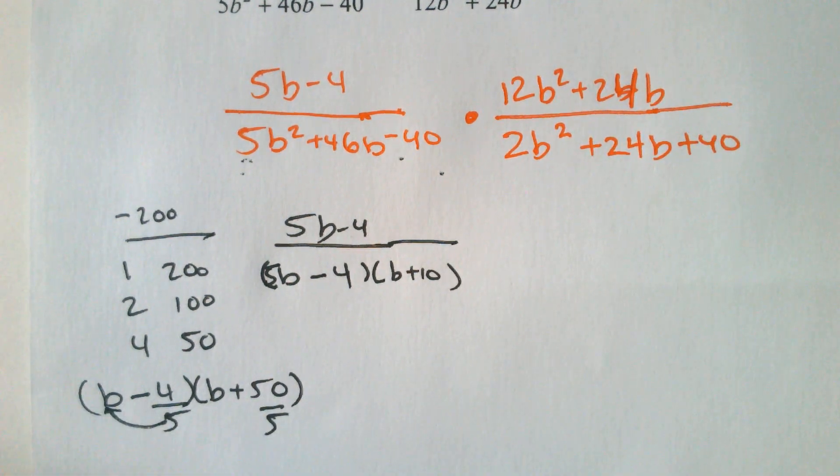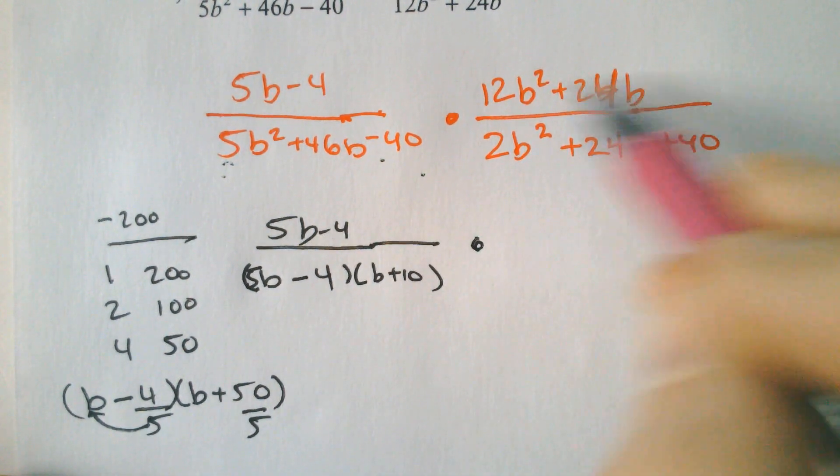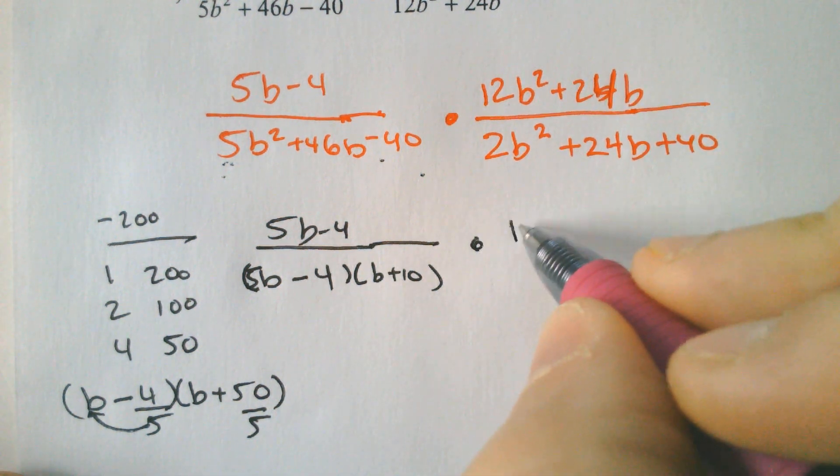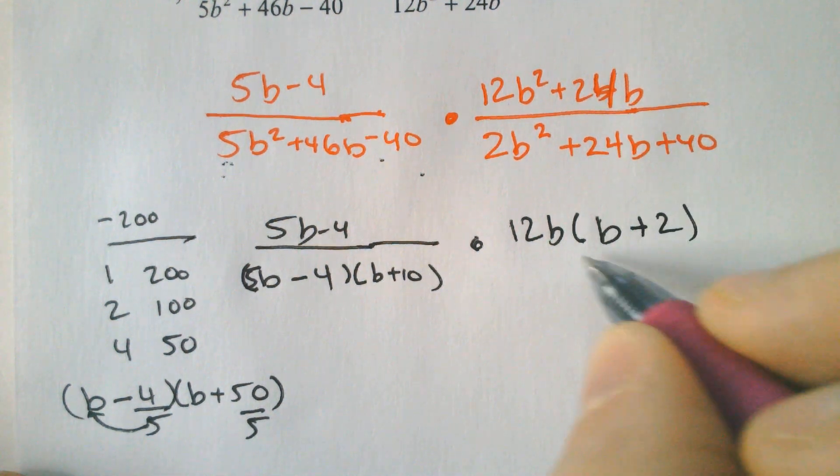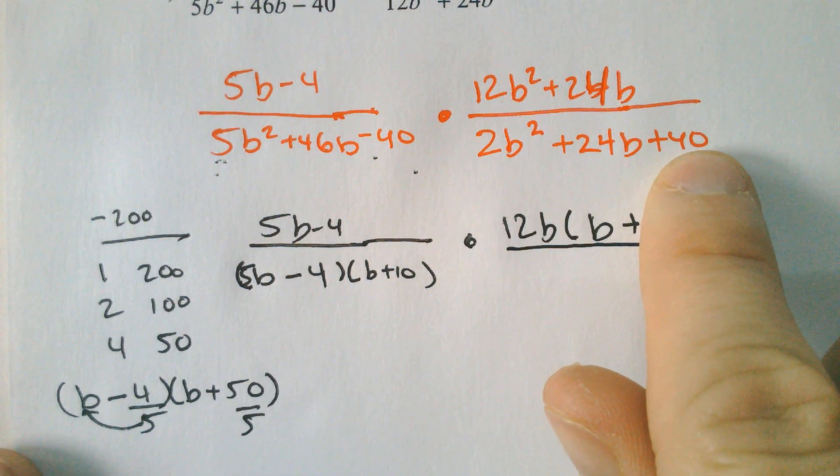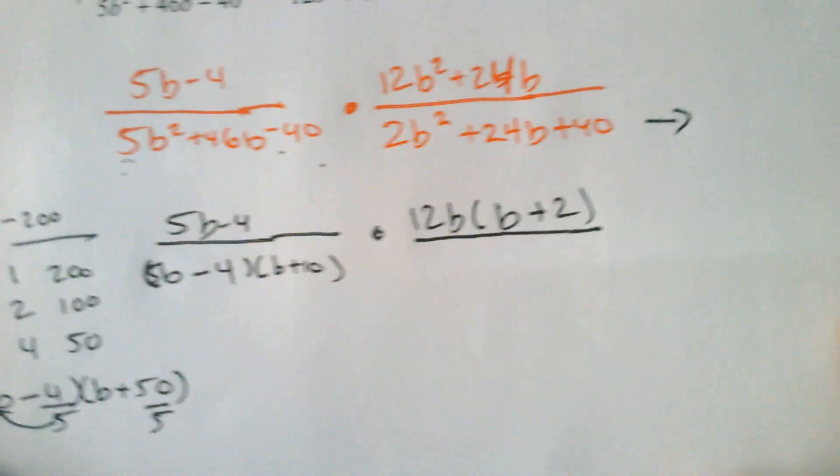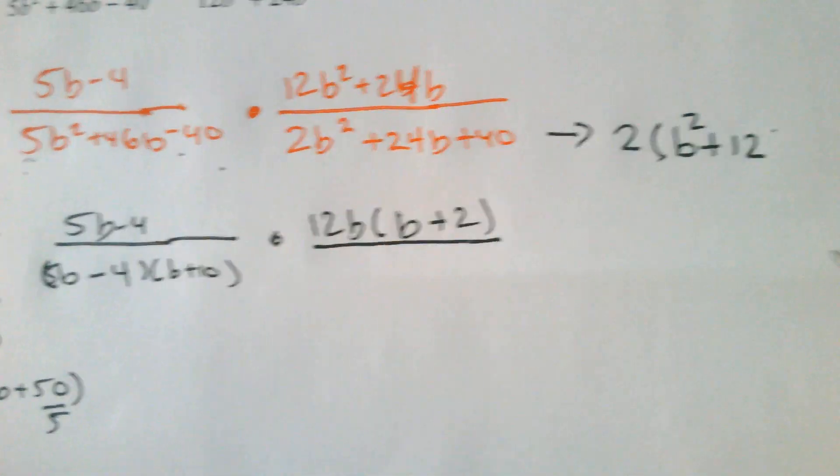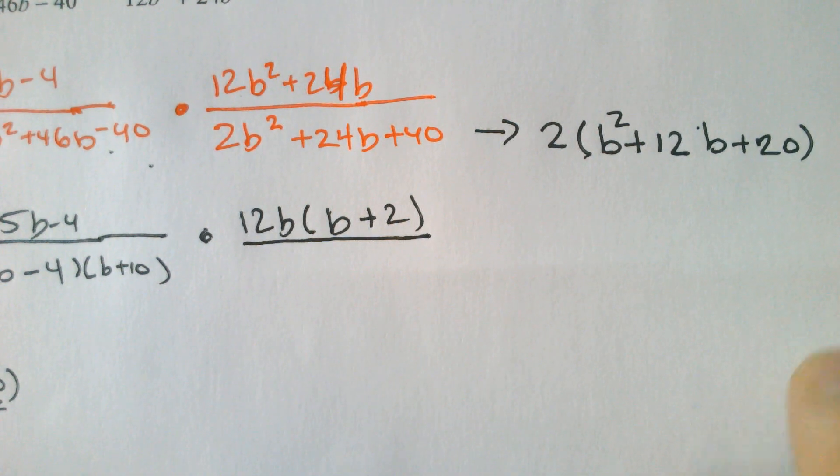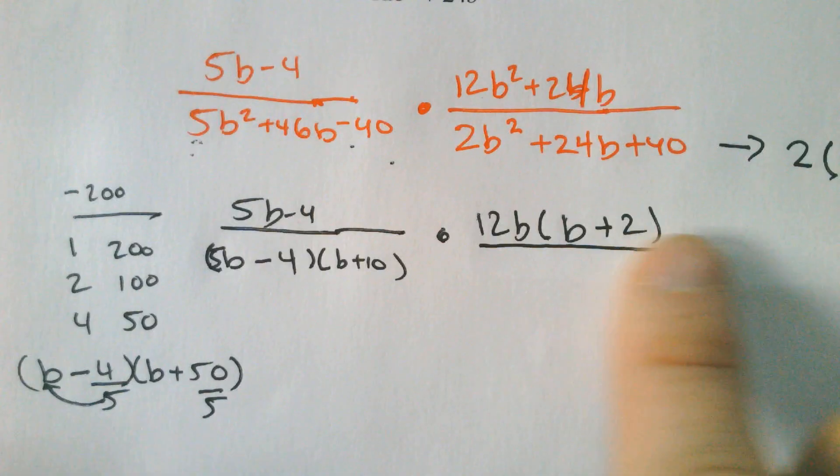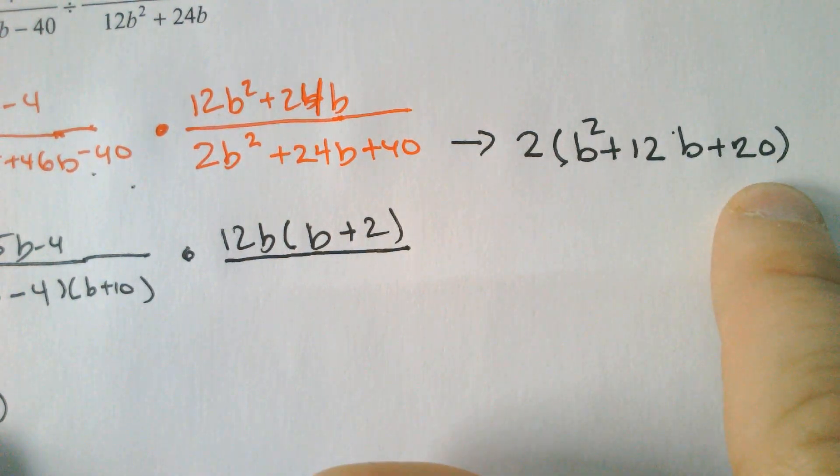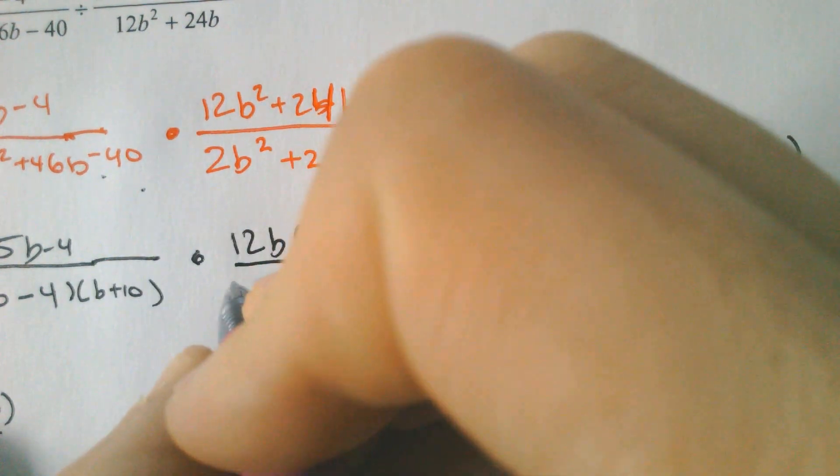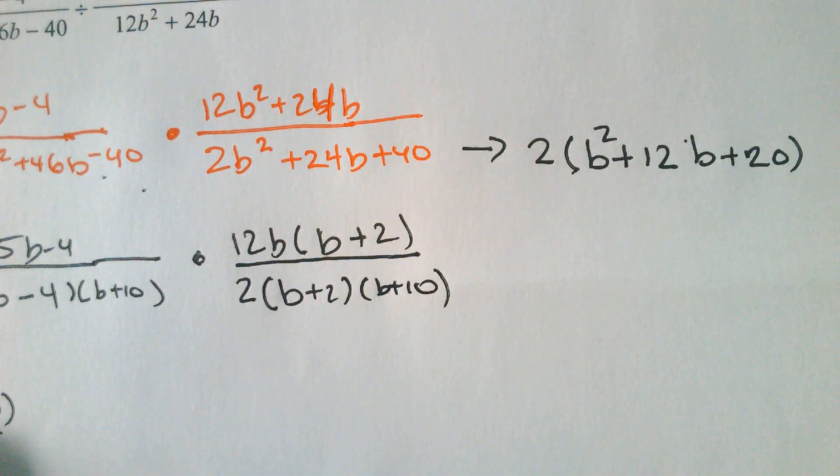This would be B. I'm going to write it off to the side. B minus 4 and B plus 50. But because we had this 5 in the beginning, we divide both of these by 5, which 50 divided by 5 is 10. So it would be B plus 10. 4 doesn't really divide by 5, so it is going to be 5B minus 4. That 5 just goes right in front. So I factored that one. I still have to factor this fraction. These involve a lot of factoring. I'm sorry to tell you this. And in this case, the top of the fraction, they both divide by not only a 12, but a 12B, leaving us with B plus 2.